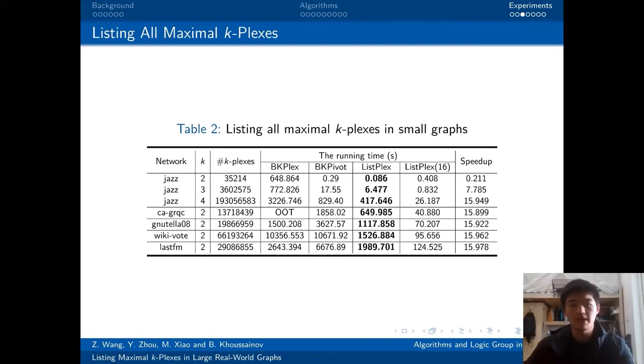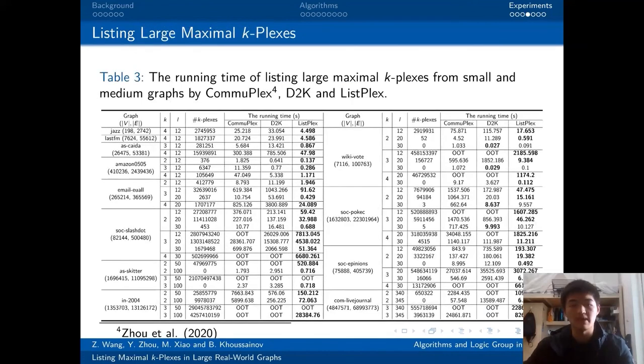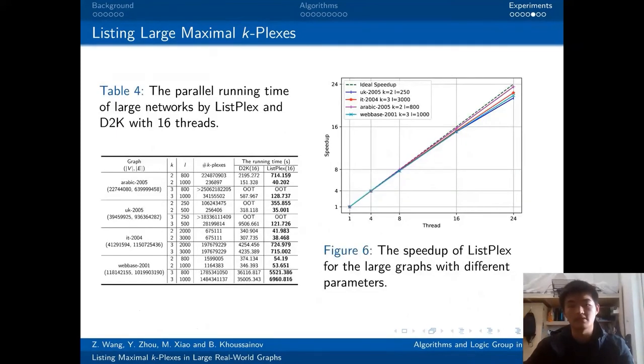In terms of listing all the maximal k-plexes, you can see our algorithm outperforms the competitors, and our parallel version with 16 threads has a good speedup. In terms of listing large maximal k-plexes, it's impressive that our algorithm outperforms the competitors by orders, and even several orders. This part is the test on our largest graph in 16 threads. You can see our algorithm still outperforms the competitors, and our algorithm has a nearly perfect speedup on this instance.